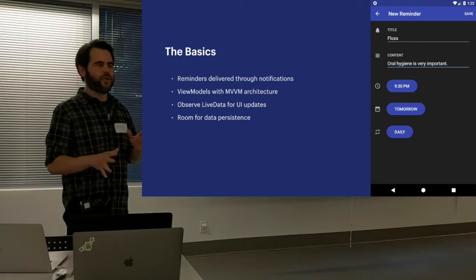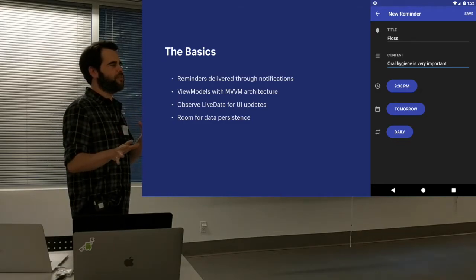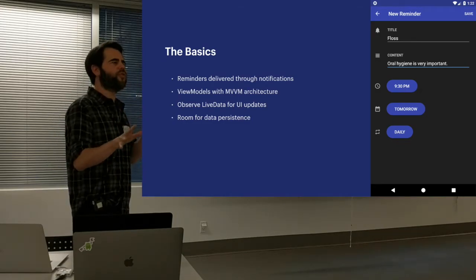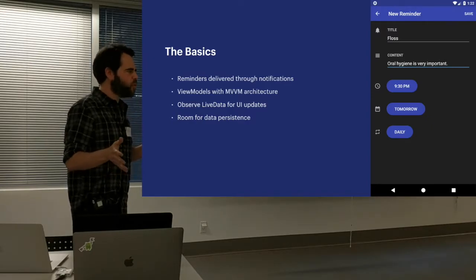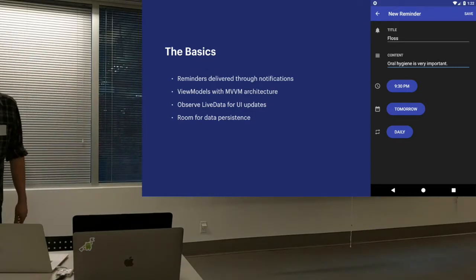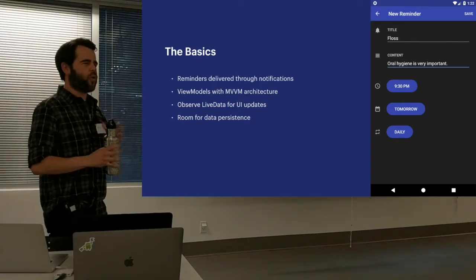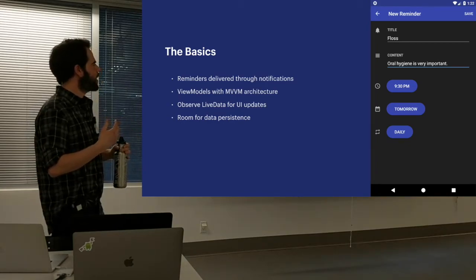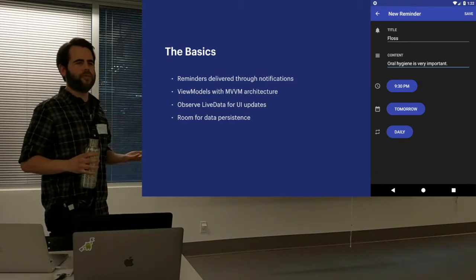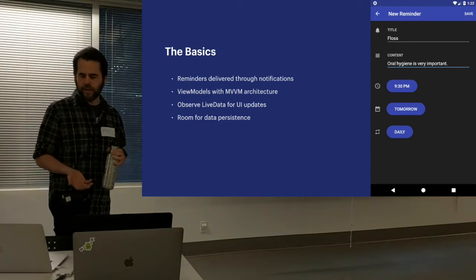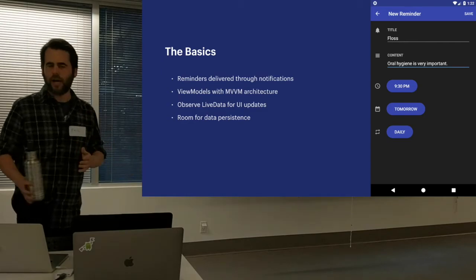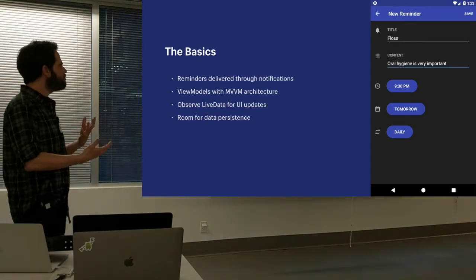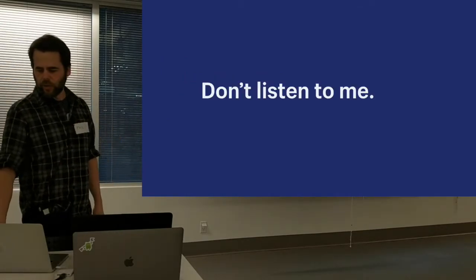Just to get an idea — has everyone sort of heard of architecture components and know what they are? For the most part, this isn't going to be much of a tutorial. It's going to be more about going over how I used them, the experience I found, and how I made them work together. Hopefully it gives you an idea of what it's like to use them in a real-world situation.